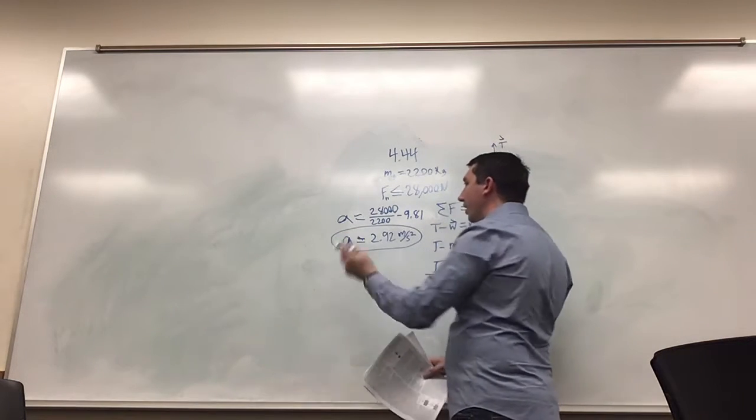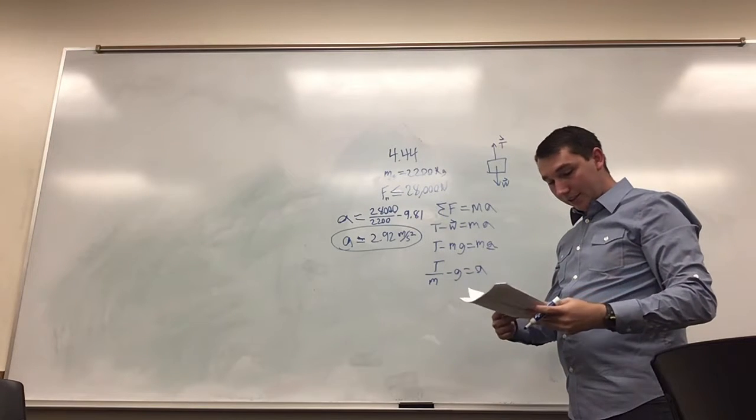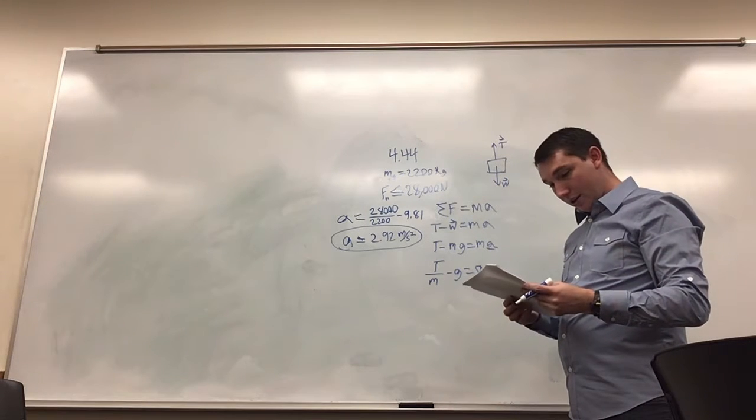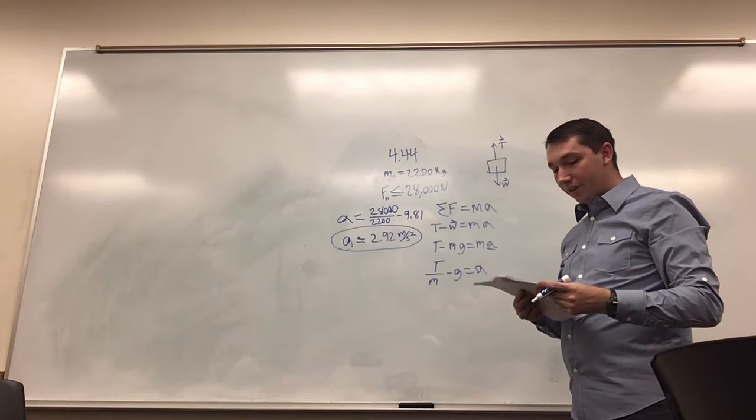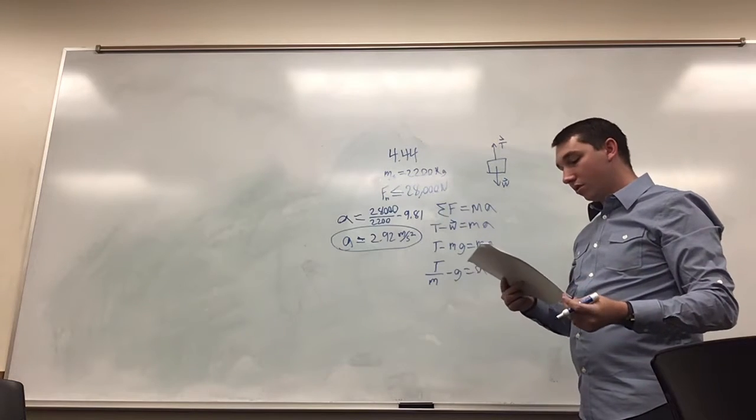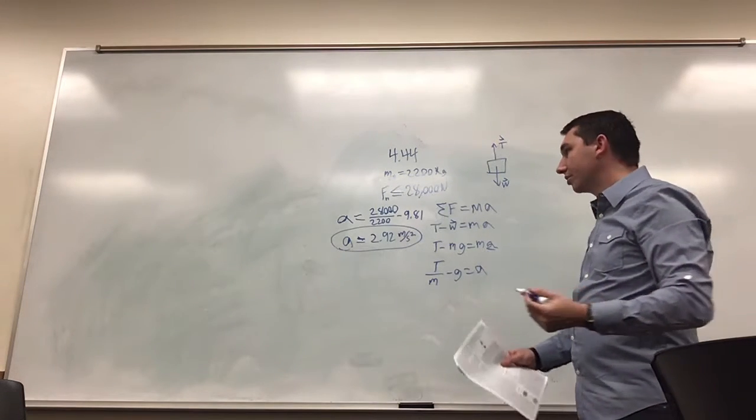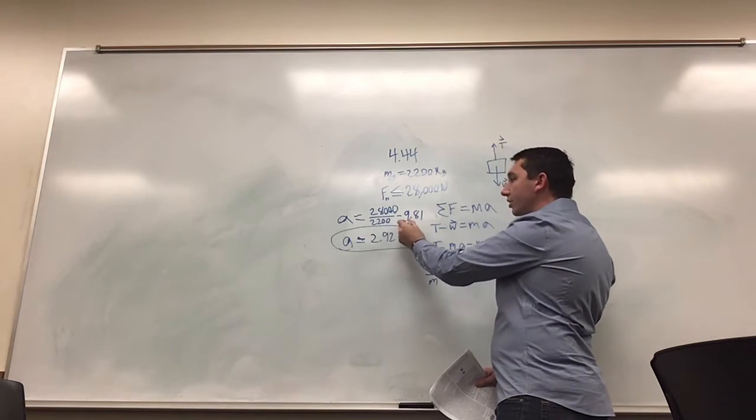Part B then asks what would be the answer to part A if the elevator were on the moon, where gravity is only 1.62 meters per second squared. So it's the same thing, we're just going to be replacing this gravity with the gravity of the moon.